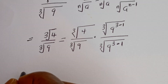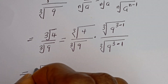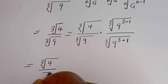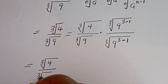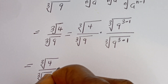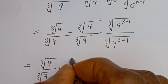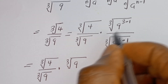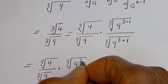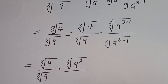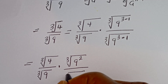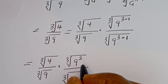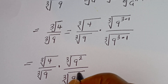Then this is equal to the cube root of 4 divided by the cube root of 9, multiplied by the cube root of 9 to the power of 2 — since 3 minus 1 equals 2 — divided by the cube root of 9 to the power of 2.